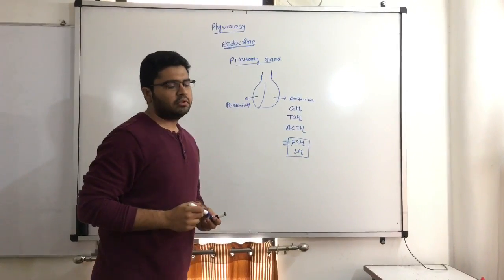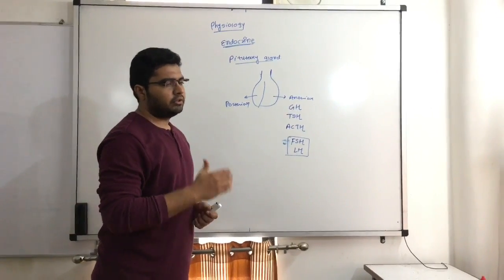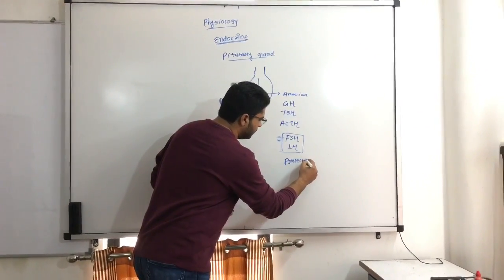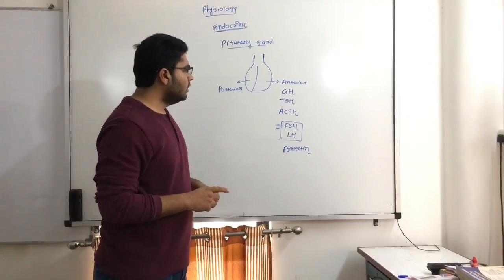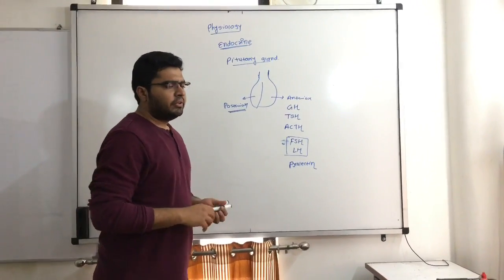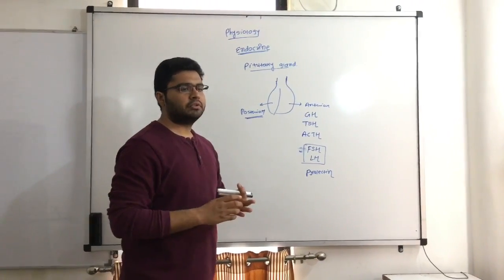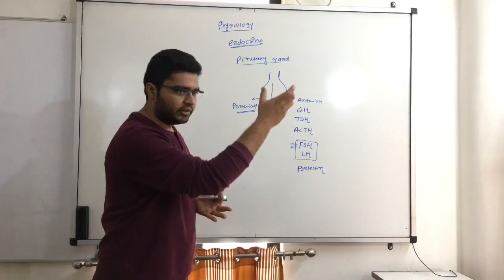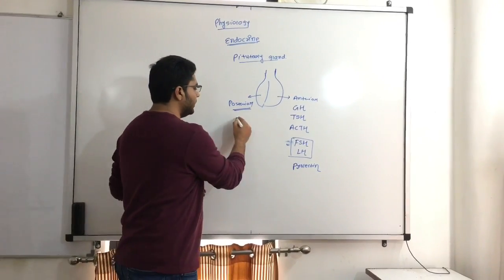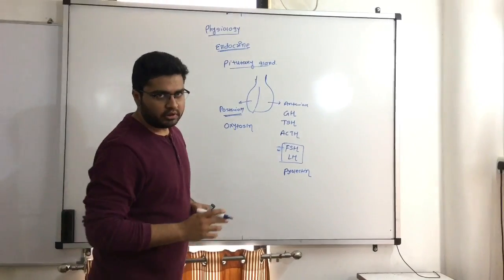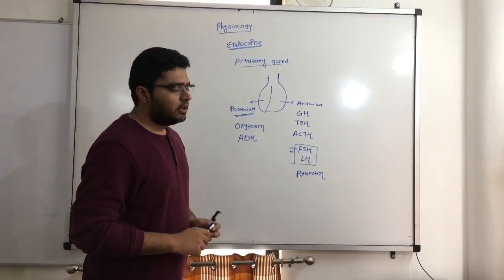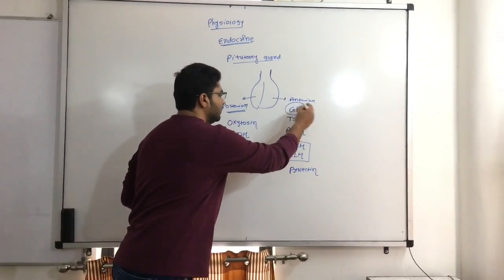The hormones regulating sexual functions are FSH (follicle stimulating hormone), LH (luteinizing hormone), and prolactin. These are the hormones produced from the anterior pituitary gland. The hormones stored in the posterior pituitary gland are actually produced in the hypothalamus, descend down, and are stored there. These two main hormones are oxytocin and ADH, the antidiuretic hormone.